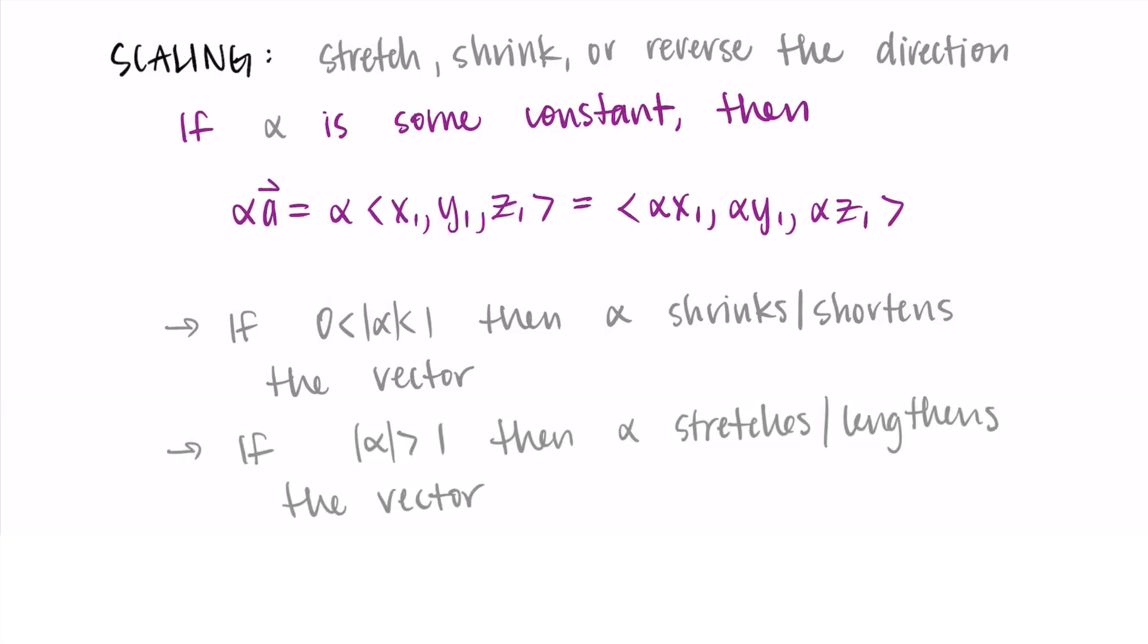Then if the absolute value of alpha is greater than 1, then alpha is going to stretch the vector. You can also think of it as lengthening it. So you can imagine if alpha is some number larger than 1, we're taking all of the components and making them into a bigger number. And so the vector is now longer.